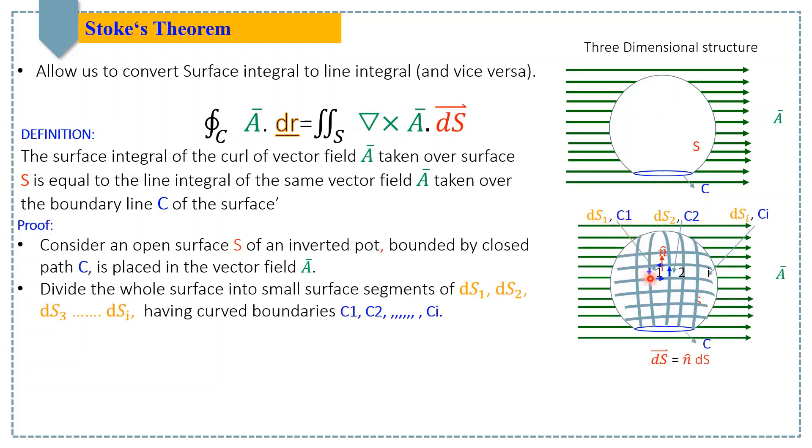Notice that to specify the curl of any vector function at any segment, we need to decide the loop direction first. That would be either clockwise or anti-clockwise. But it's easy because we draw the normal of the surface in an upward direction, like you can see this n-cap normal of the surface dS1.